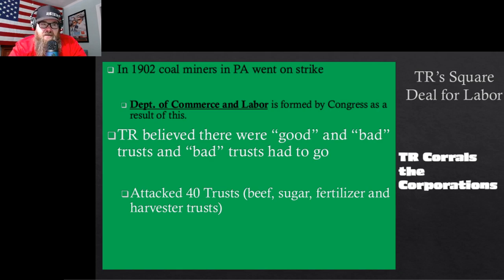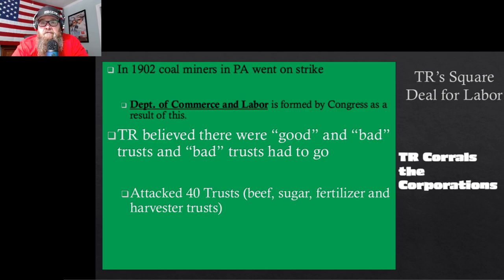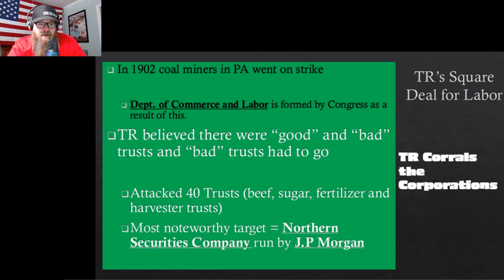Roosevelt created the Department of Commerce and Labor, which dealt with things like strikes — such as the coal miners' strike. A president will get involved in a labor dispute only when it affects the entire nation, not just a single business. For example, a gasoline shortage affects the whole country, so the president steps in.